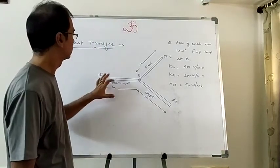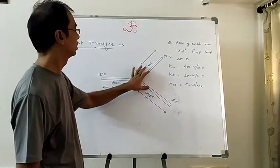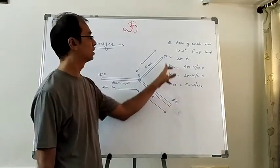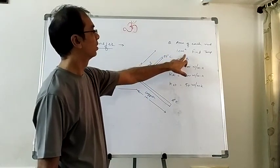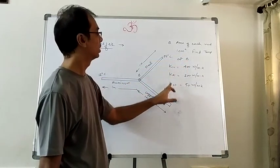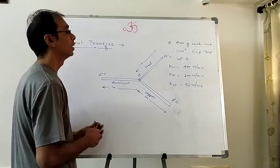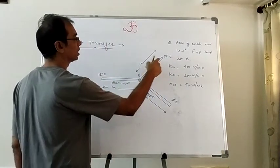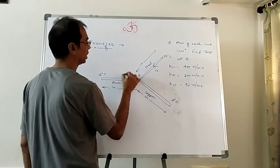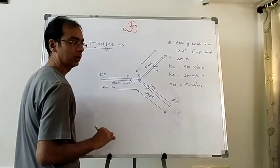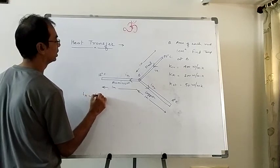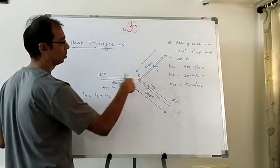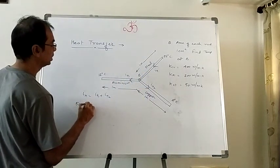Next question: three rods — aluminum, steel, and copper — are connected. Every rod has length 1 meter. Temperature at one end of the steel rod is 50°C, the aluminum end is 12°C, and the copper end is 4°C. Area of each rod is 1 cm². We have to find temperature at junction B. Heat flows from the high temperature end through steel to junction B, where it splits into IH1 (through aluminum) and IH2 (through copper), so IH = IH1 + IH2.